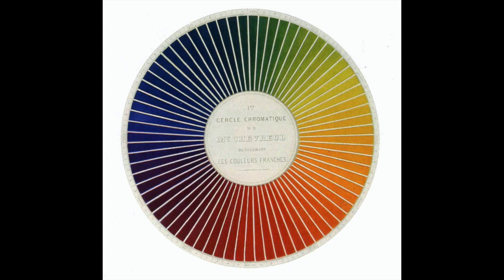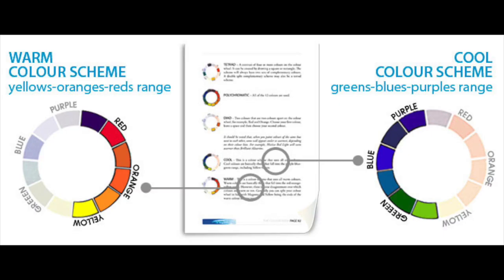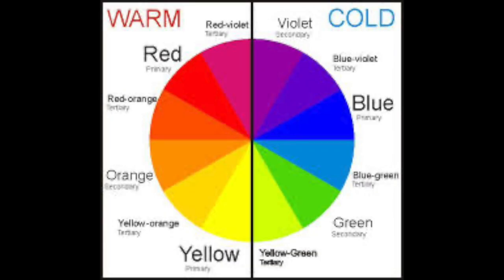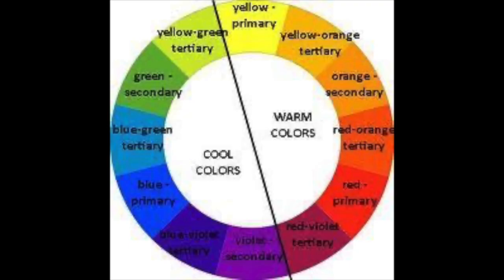The color wheel is broken into warm colors, which are the yellows, oranges, and reds, and then the cool colors, which are green, blue, and purple. You can think of it like the warmth is the sun, and blue is cold sky, and all these cool green grasses.